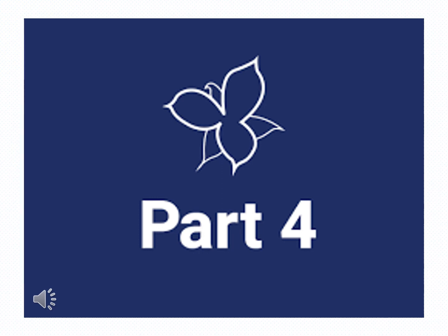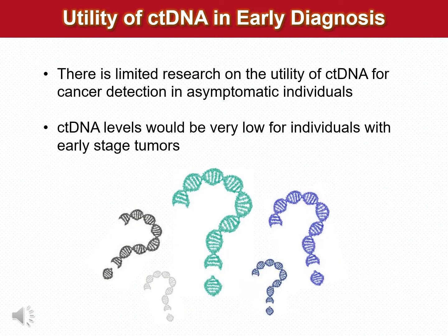I will now go to part four of my presentation and discuss in some detail the most important and clinically useful application of circulating tumor DNA for early diagnosis. As I have already told you, circulating tumor DNA is useful unequivocally for patient prognosis and patient monitoring. However, the use of circulating tumor DNA for early diagnosis of cancer is still highly controversial, and our laboratory has done some work recently published in this area.